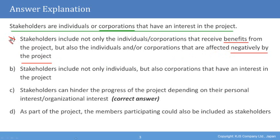Option B says stakeholders include only individuals that have an interest in the project. However, we know from the definition that stakeholders can also be corporations, not just individuals. So Option B is also wrong. Option C states that stakeholders can hinder the progress of the project depending on their personal and organizational interests — this is absolutely true, so Option C appears to be the correct answer.